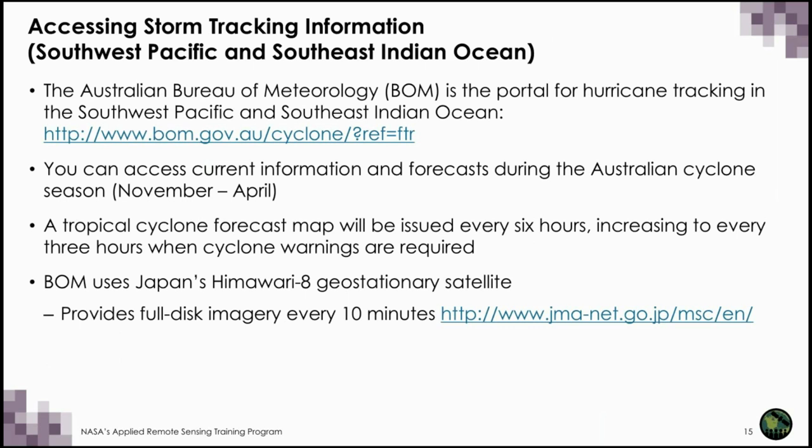Another example is Tropical Cyclone OMA, which formed off the eastern coast of Australia in February of 2019. The portal to track storms in the southwest Pacific and southeast Indian Ocean is the Australian Bureau of Meteorology, also known as BOM. There you can access current information and forecasts during the Australian cyclone season, which runs from about November through April.